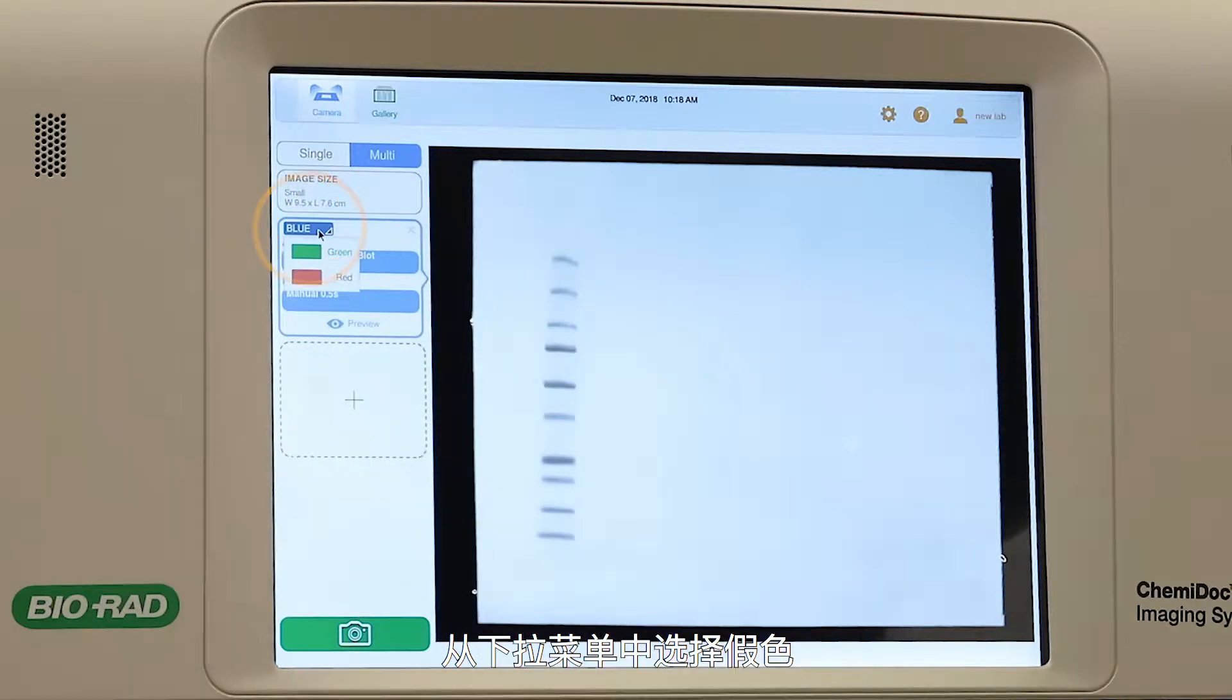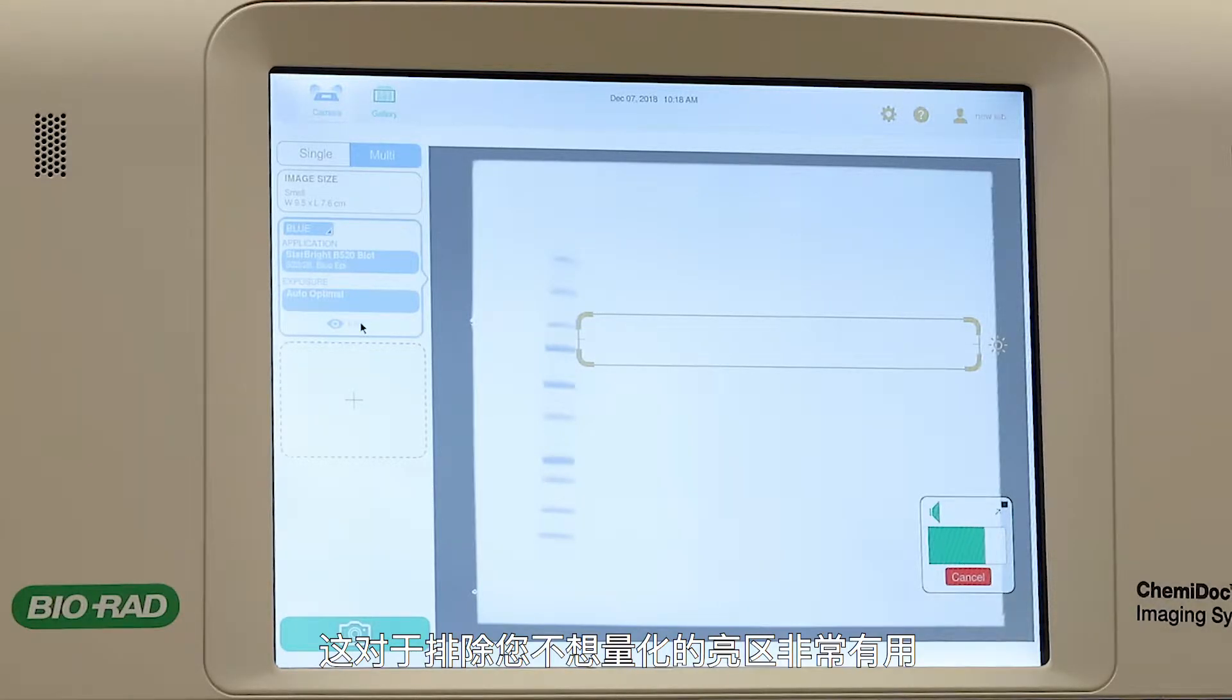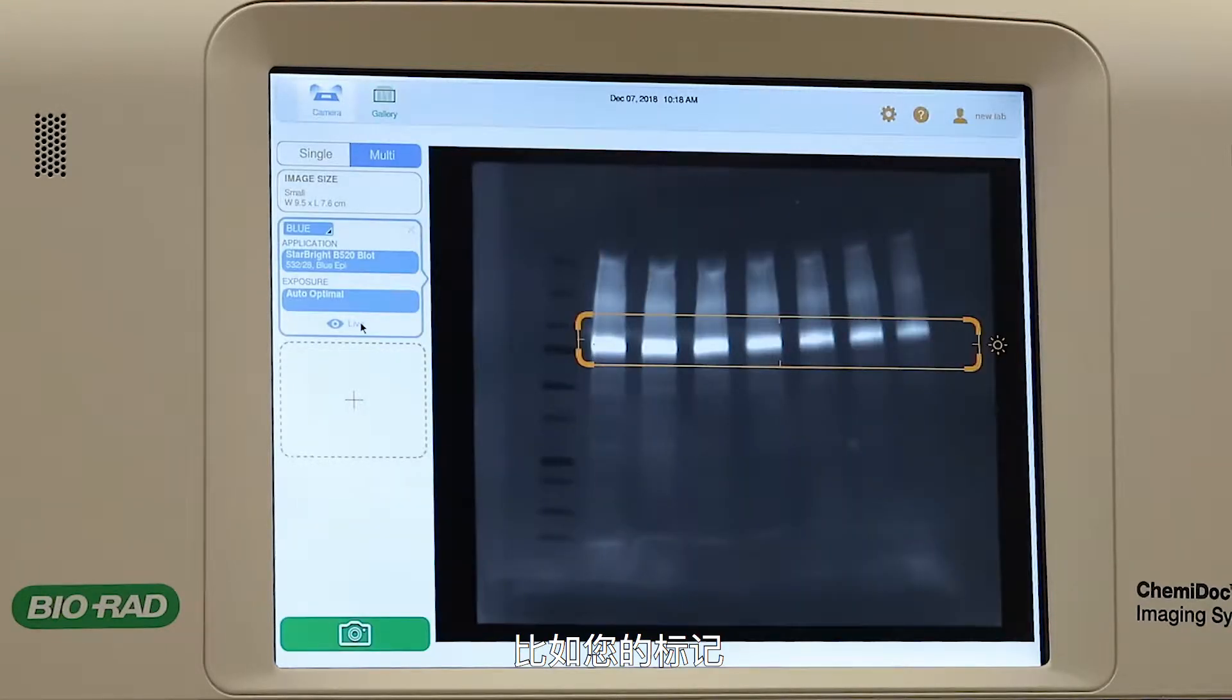Select the pseudo-color from the drop-down menu. You can take a preview of your image and set a region of interest. This can be very useful for excluding bright areas that you don't want to quantify, such as your marker.